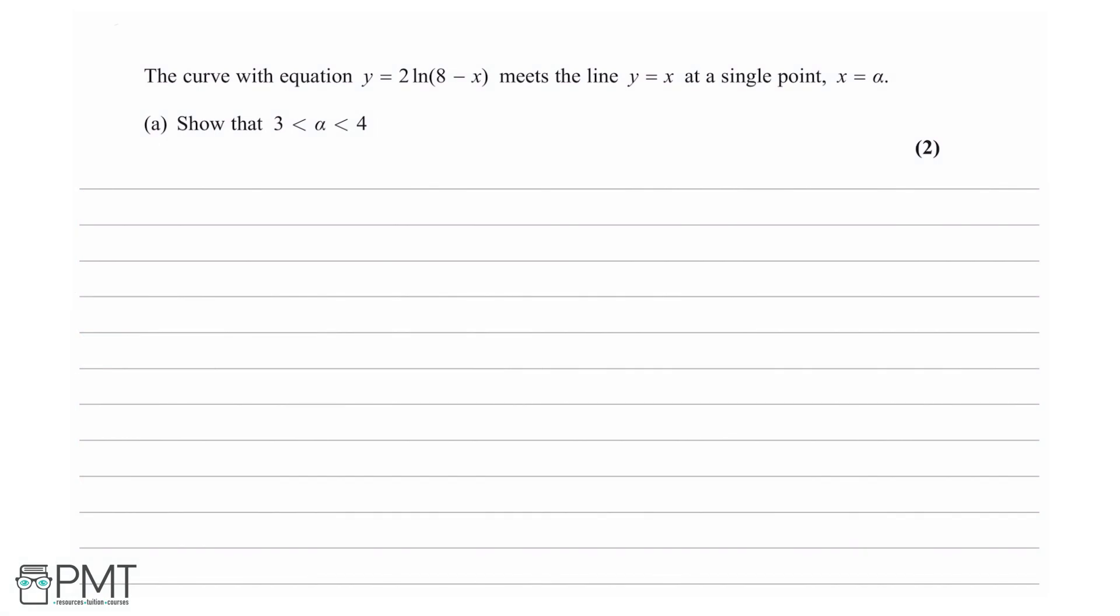We are told the curve with equation y equals 2ln(8 - x) meets the line y equals x at a single point x equals α. Part A is asking us to show that α is between 3 and 4.